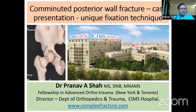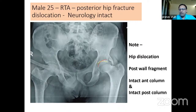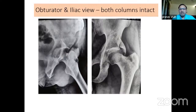This is a case of a comminuted posterior wall fracture, presenting a slightly different and unique fixation technique. This is a 25-year-old male with road traffic accident, posterior hip fracture-dislocation, neurologically intact. On the pelvis AP x-ray: note the hip dislocation visible in the difference of the arcs of the sourcil and the head, the posterior wall fragment, and the intact anterior and posterior columns. On obturator and iliac views, both columns are intact — the posterior column on the iliac view and the anterior column on the obturator view.